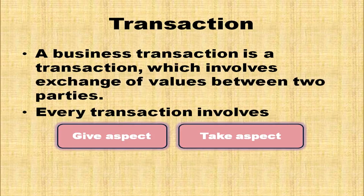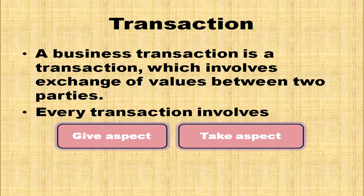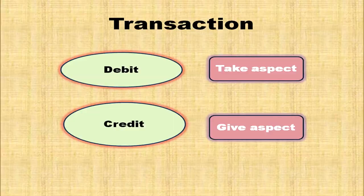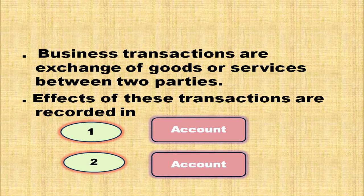You should understand what is a business transaction. A business transaction involves exchange of values between two parties. Every transaction involves two aspects: one is the giving aspect and another is the taking aspect. The giving aspect will be credited and the taking aspect will be debited. Business transactions are exchange of goods or services between two parties, and the effect of these transactions are recorded in two accounts.